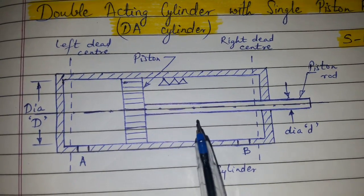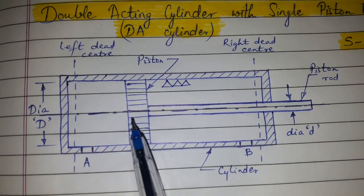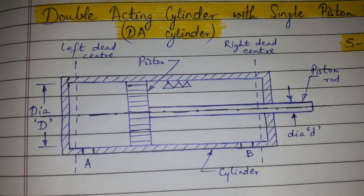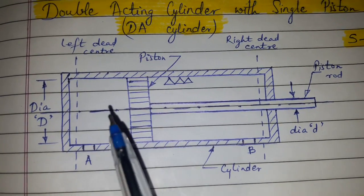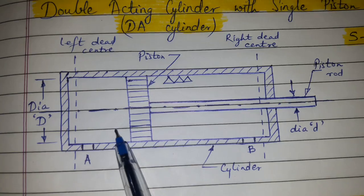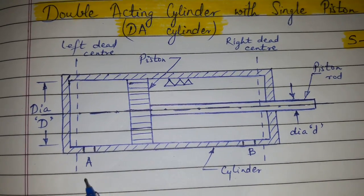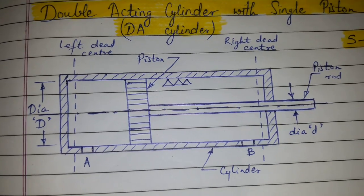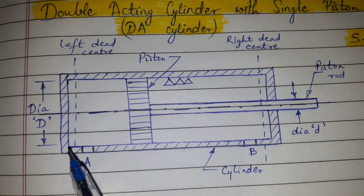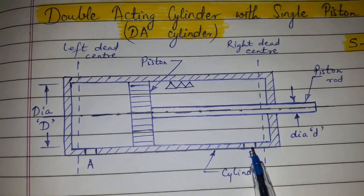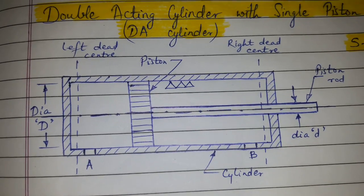Due to the pressure force created by the oil entering through port B, the piston will start moving from right to left. During this motion, the used oil on the other side of the piston will go out through port A and will return to the oil reservoir.